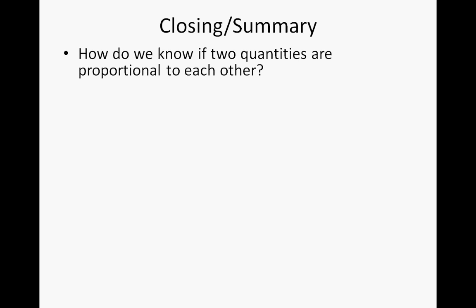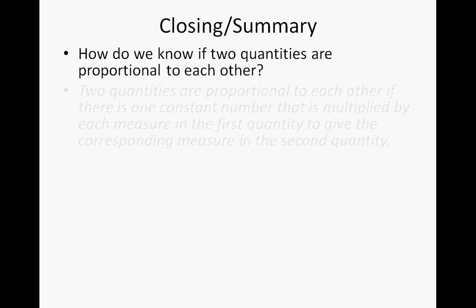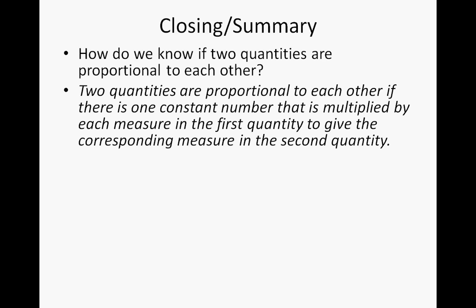Let's wrap this up. How do we know if two quantities are proportional to each other? Take a stab at answering that question now that you've done the lesson. Two quantities are proportional to each other if there is one constant number that is multiplied by each measure in the first quantity to give the corresponding measure in the second quantity. Remember, we can figure out that constant by doing division and finding out if the ratios are equivalent to each other.